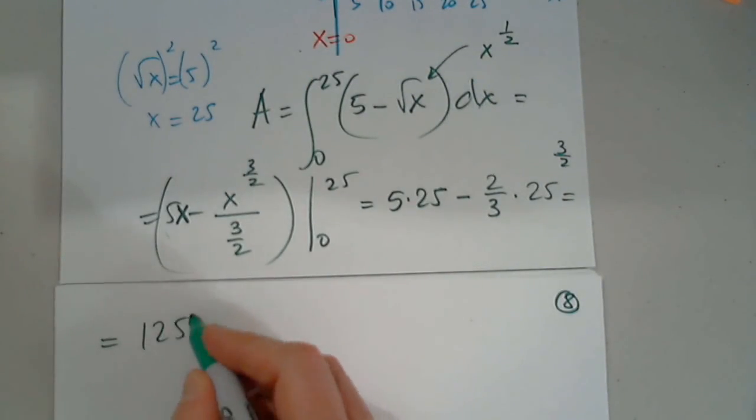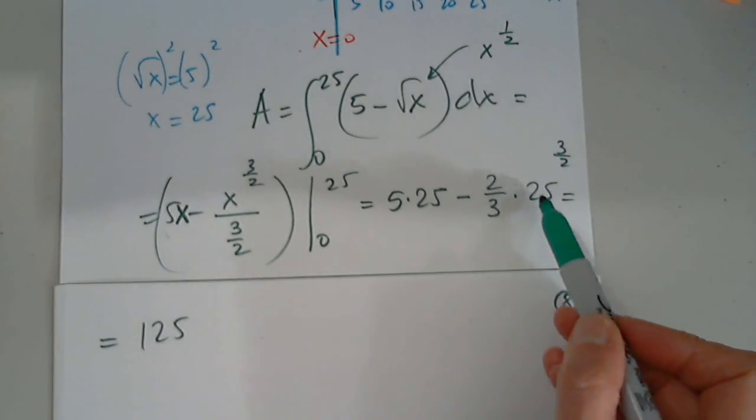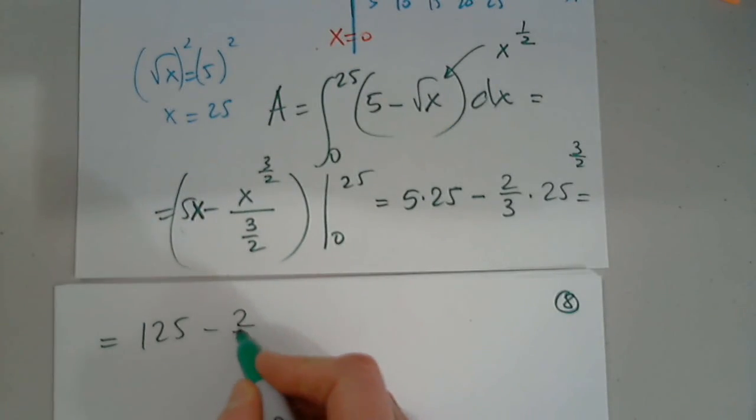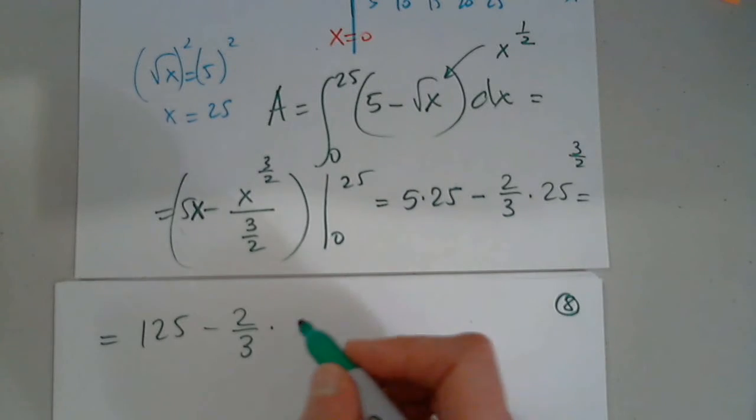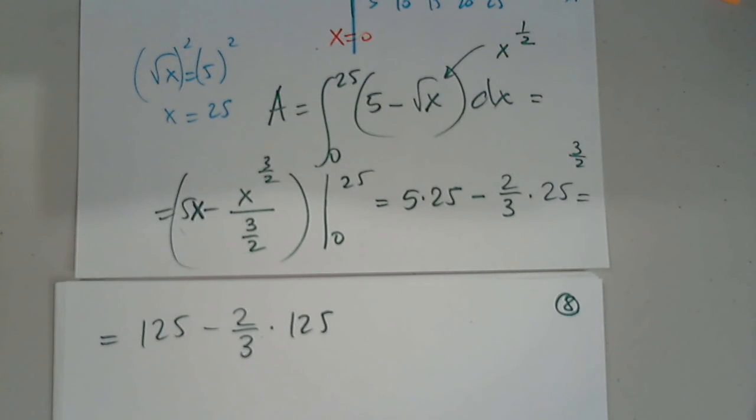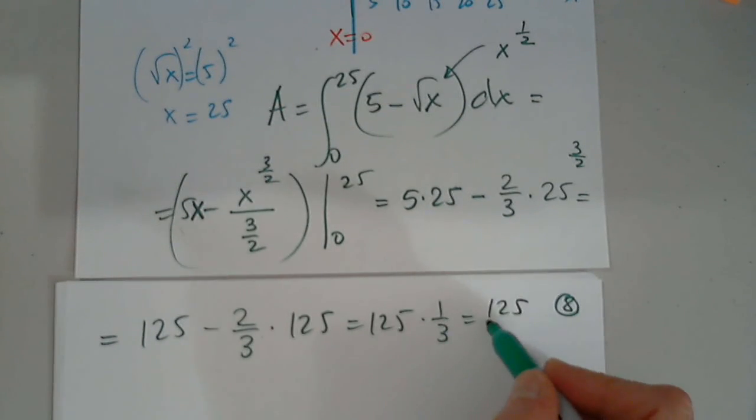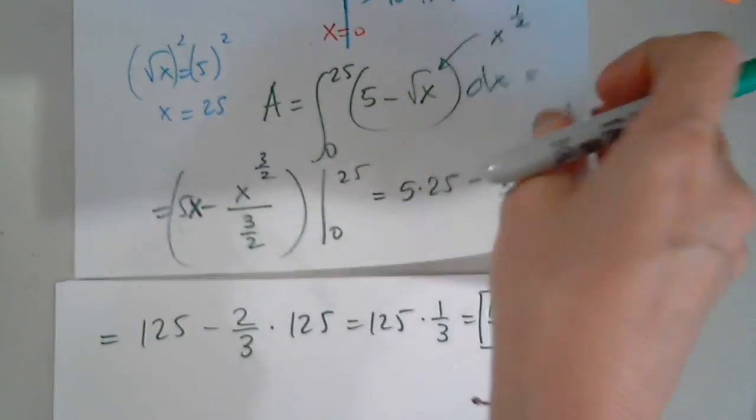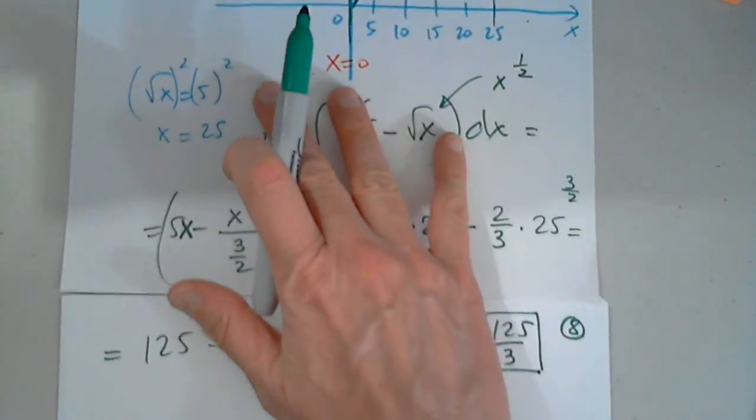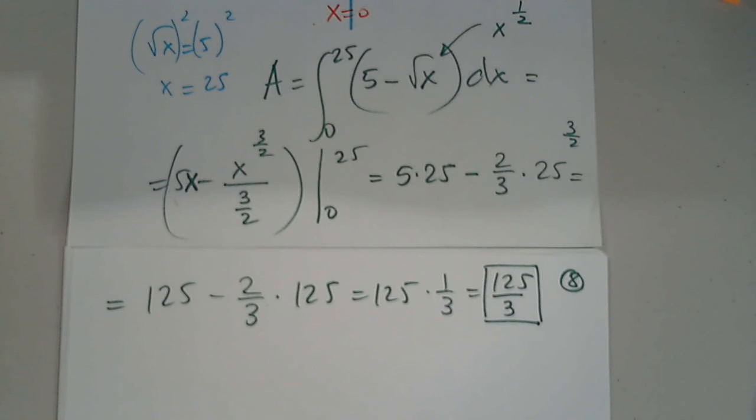So 5 times 25 minus flip 2 thirds times 25 raised to 3 halves. So 5 times 25 is 125. The same thing here. The square root of 25 is 5. 5 to the third. So minus 2 thirds times 5 to the third is the same thing. 125. 5 times 5 is 25. 5 times 5 is 125. You know me. I like to factor out. And then 1 minus 2 thirds is 1 third. And can I simplify this? No, I cannot. So this is final. Units squared. And this is this area. The shaded area among these three curves. Very good question. Thank you.